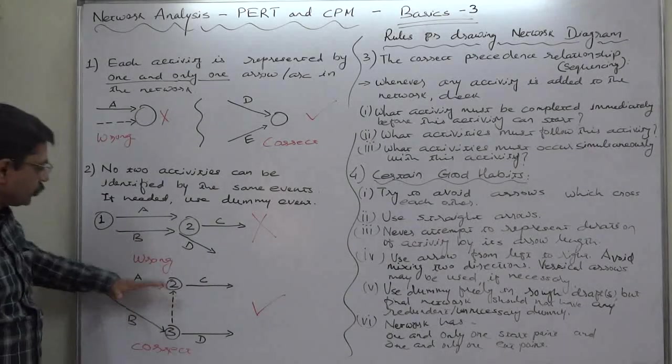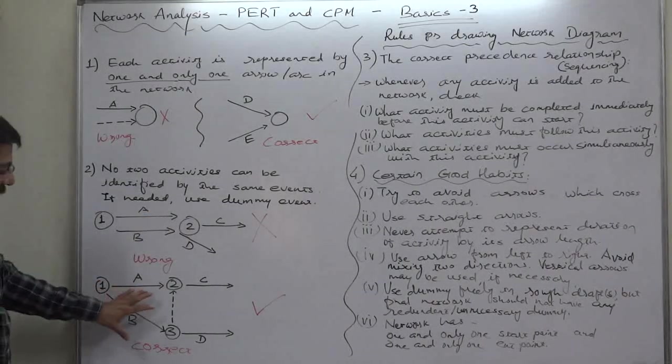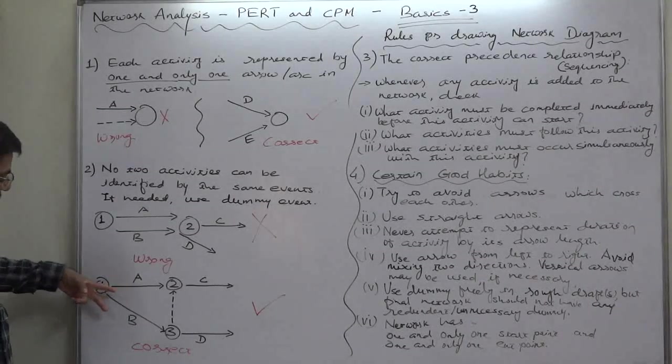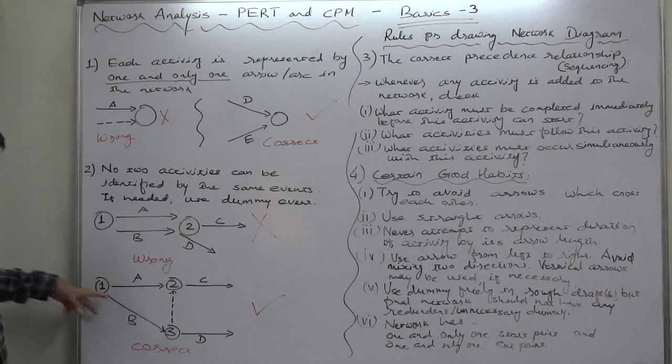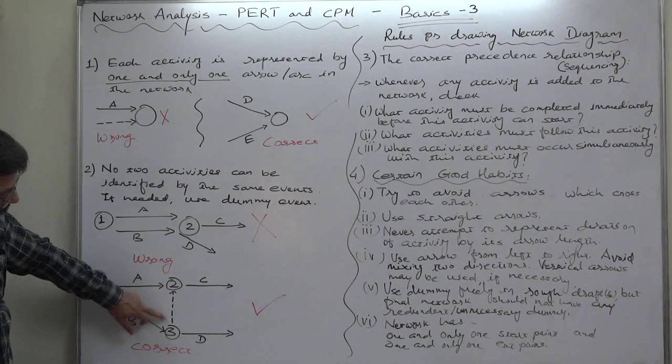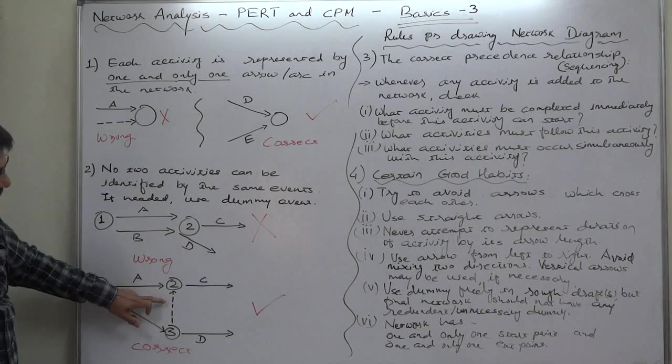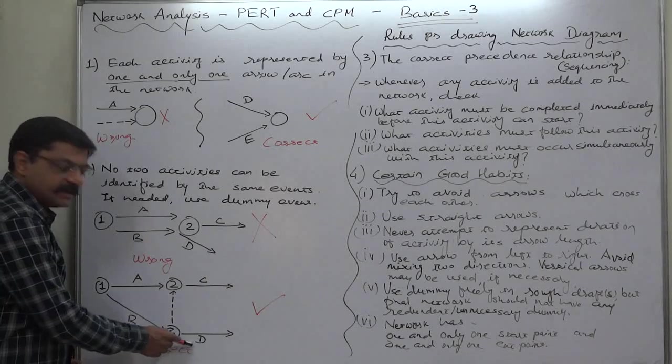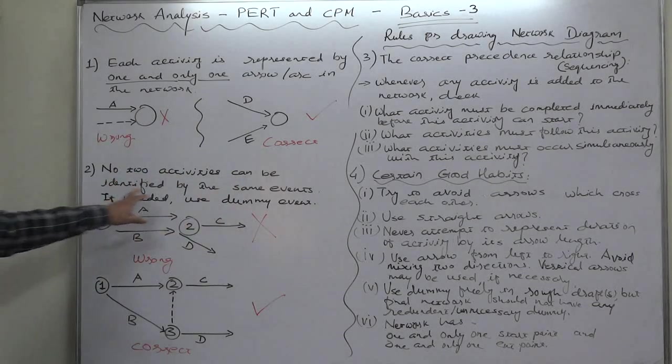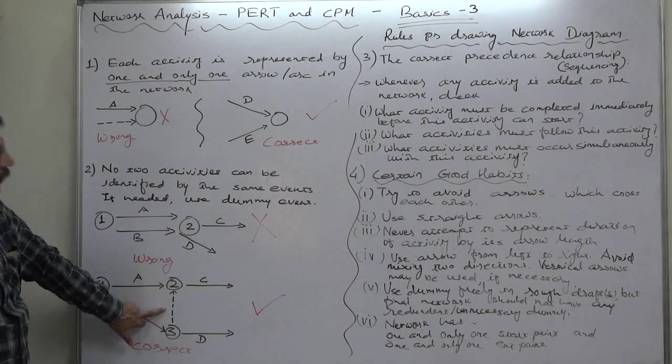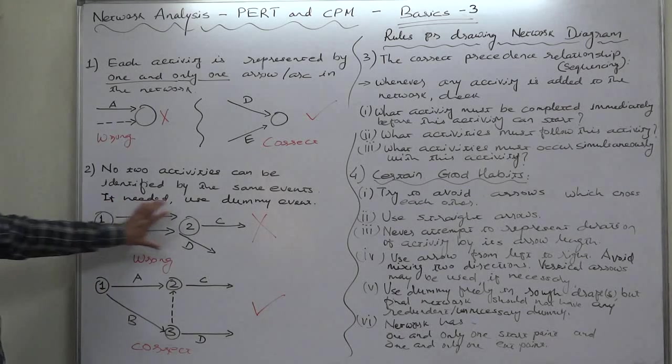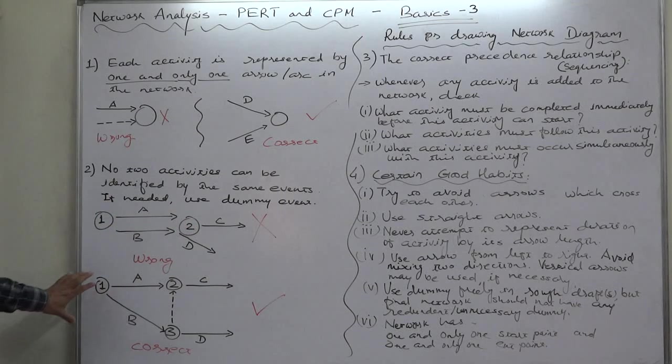Instead, we should show all these activities like this. See, event 1 is a burst event. A and B start at event 1. A and B are common predecessors of C. That we can show by using the dummy as the extension of activity B. B alone is the predecessor of D. That also can be shown in this way. So, no two activities can be identified by the same event. If we need we can use the dummy event. This is the wrong way to present the activities and events in the network diagram. This is the correct way.